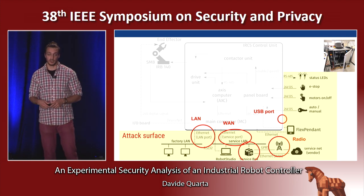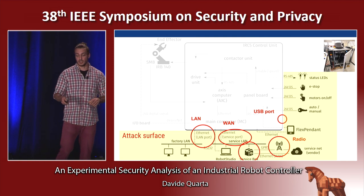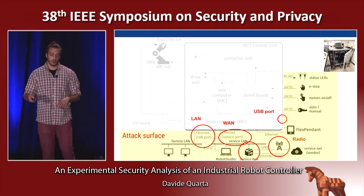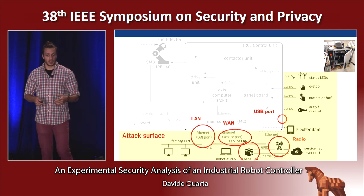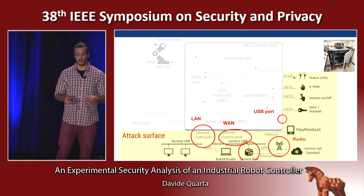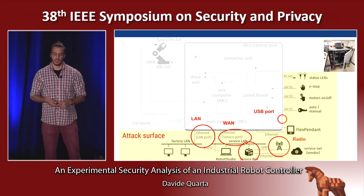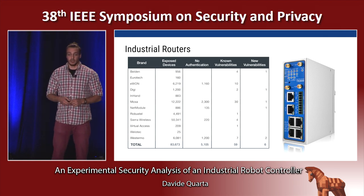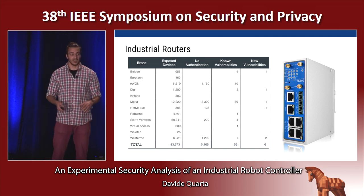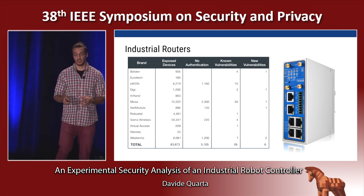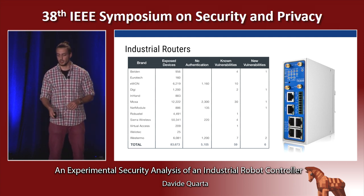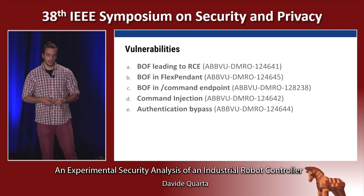Regarding connections to the robot, there is a LAN port and a service port that can be used for remote servicing. Attached to the service port or LAN port there can be an industrial router connected to a mobile network operated by the vendor for remote maintenance. The remote attack surface is therefore very large. We also found that not only were some robots directly connected to the internet, but many industrial routers were directly connected and typically concealed industrial control systems behind them.